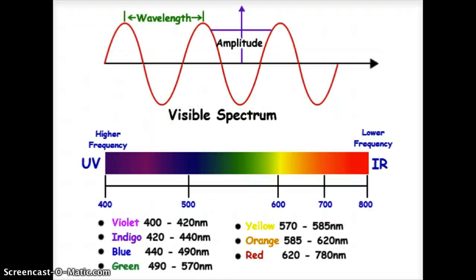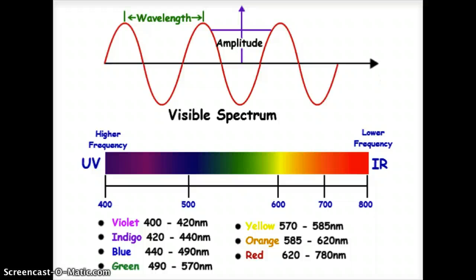Each color in the visible spectrum has a different wavelength. Higher-frequency waves are on the violet/indigo end, closer to UV light, while lower-frequency waves are on the red end, closer to infrared. The wavelengths are measured in nanometers — where nano means 10 to the negative 9th. Violet light ranges from 400 to 420 nanometers, while red light ranges from 620 to 780 nanometers.